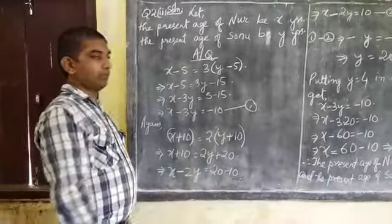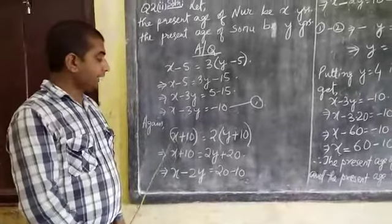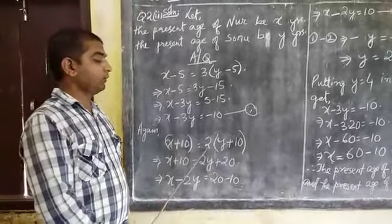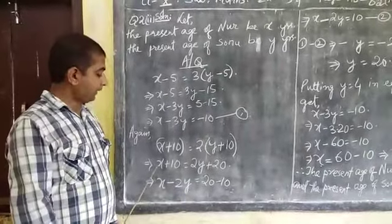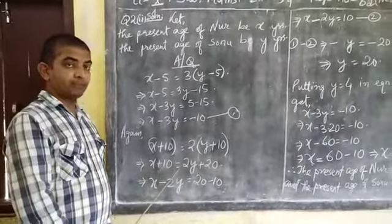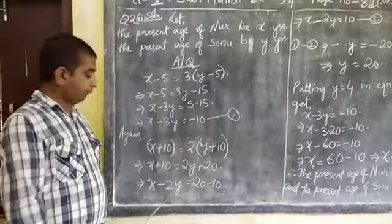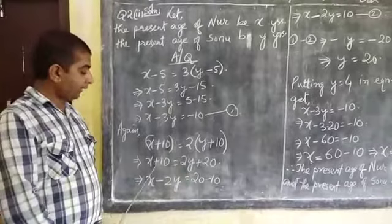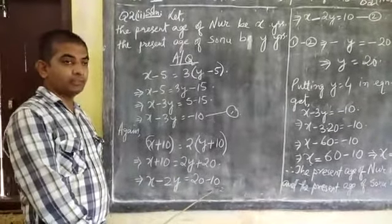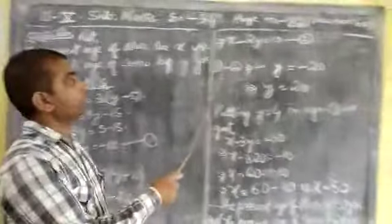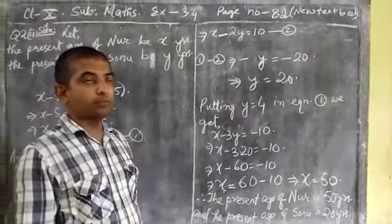Again, according to the second condition of the question, x plus 10 is equal to 2y plus 20. Implies x minus 2y is equal to 20 minus 10, implies x minus 2y is equal to 10, equation number 2.